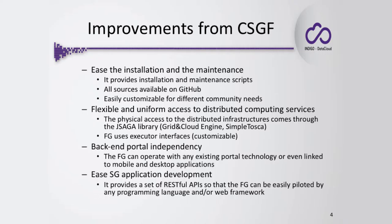The Future Gateway also provides flexible and uniform access to distributed computing services, accomplished mainly by the JSAGA library. JSAGA is a standard API created to target distributed applications on distributed infrastructure. With the Future Gateway, there are also defined so-called executor interfaces, providing a way to customize the standard behavior of the Future Gateway according to the specific targeted distributed infrastructure you may have.